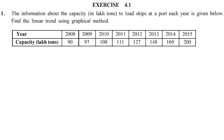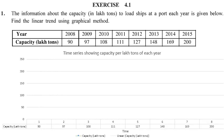Exercise 4.1, Question 1: the data gives years 2008 to 2015 and the capacity to load ships at a port each year. We convert the years into 1 through 8. Plotting the points: 90, 97, 108, 111, 121, 148, 169, and 200. We draw a straight trend line through these points. Note that this best-fit line has been drawn using computer software, so it is the most accurate possible line.